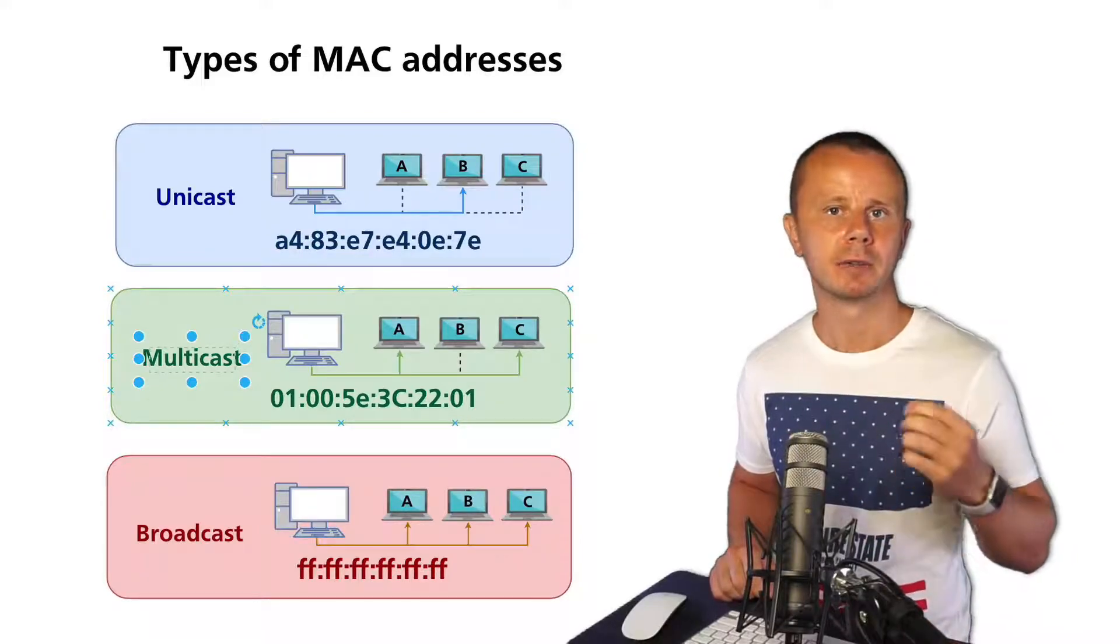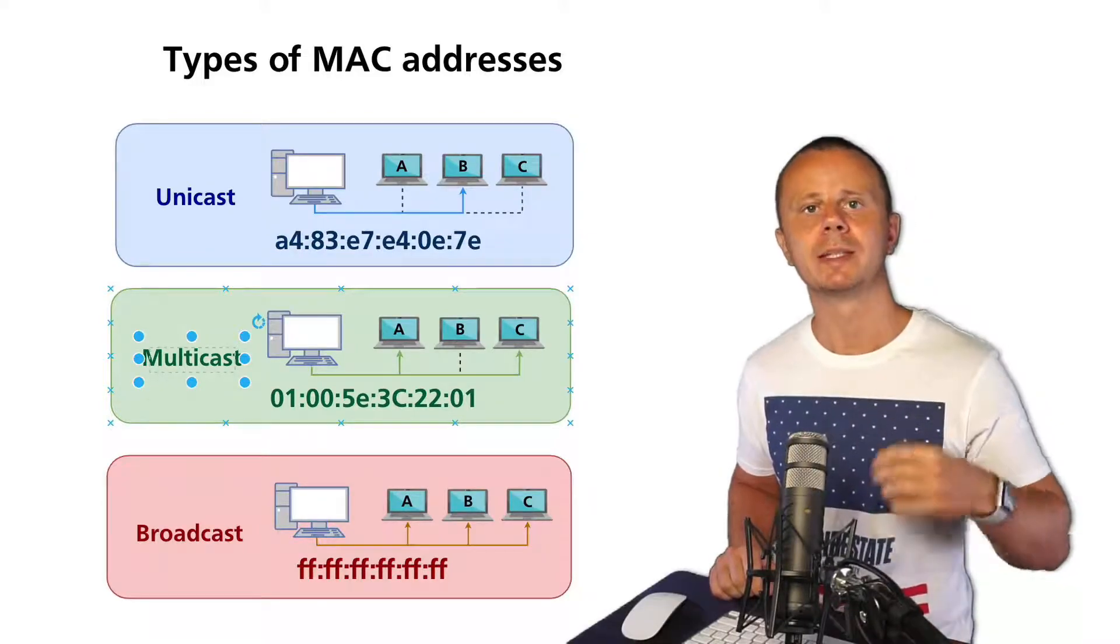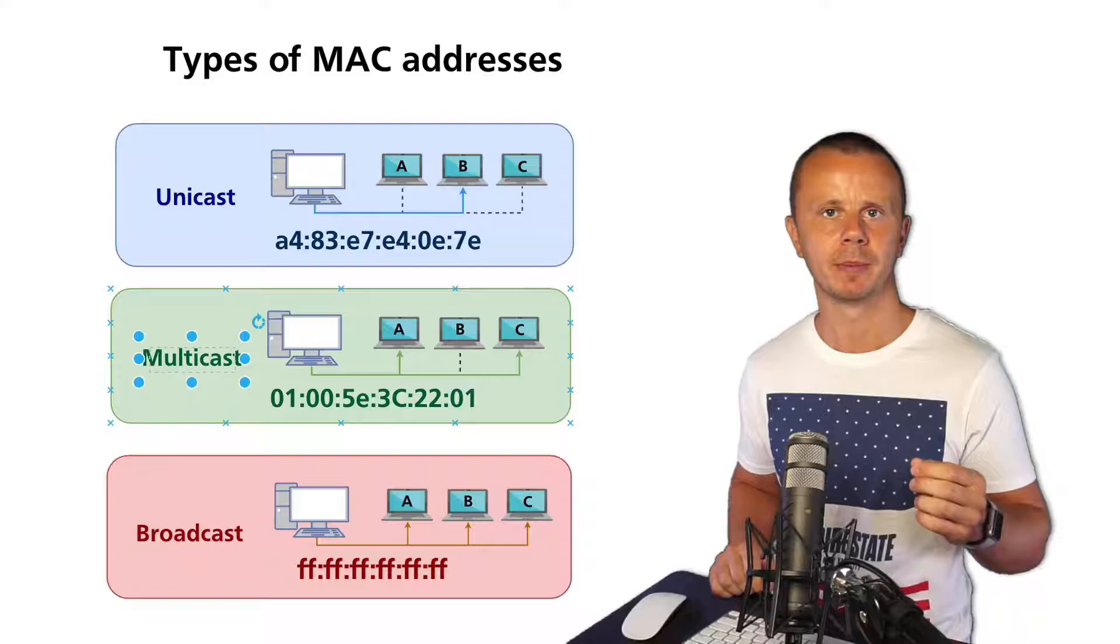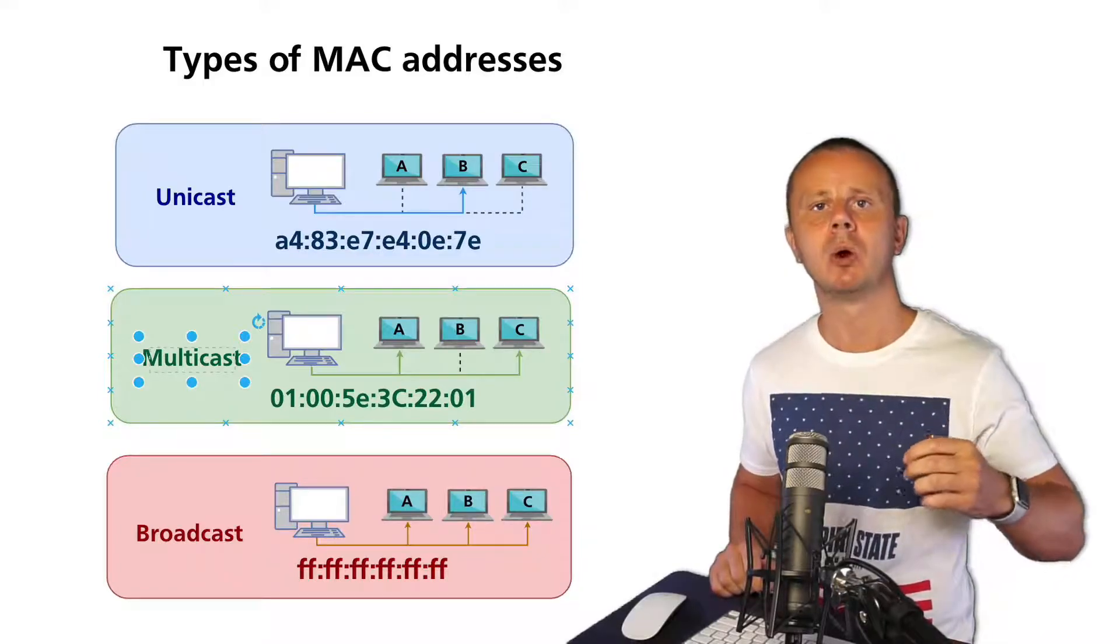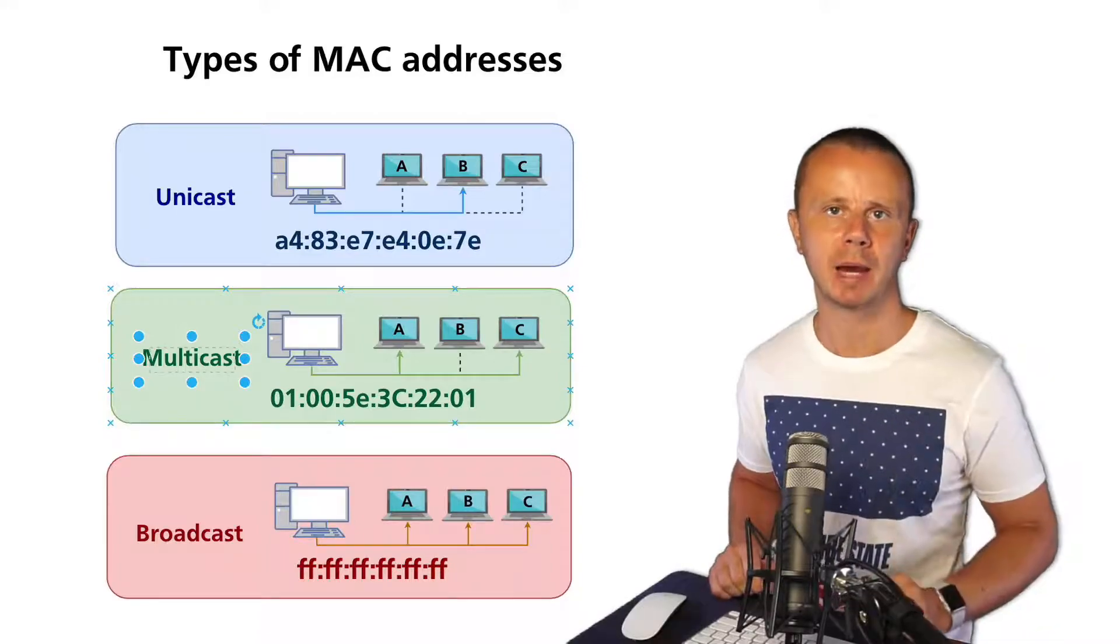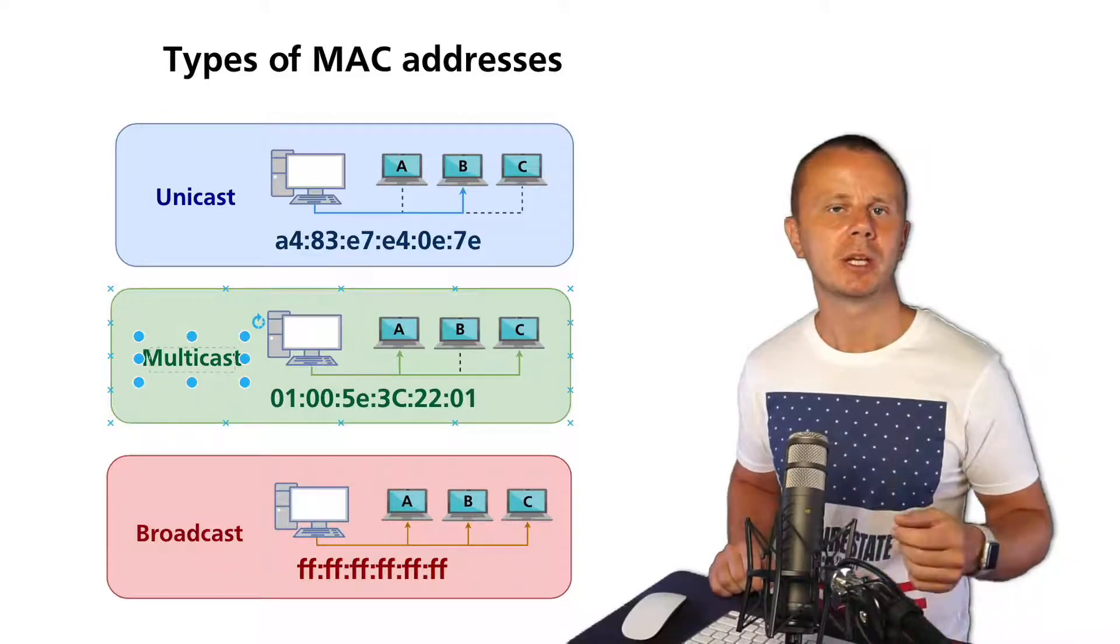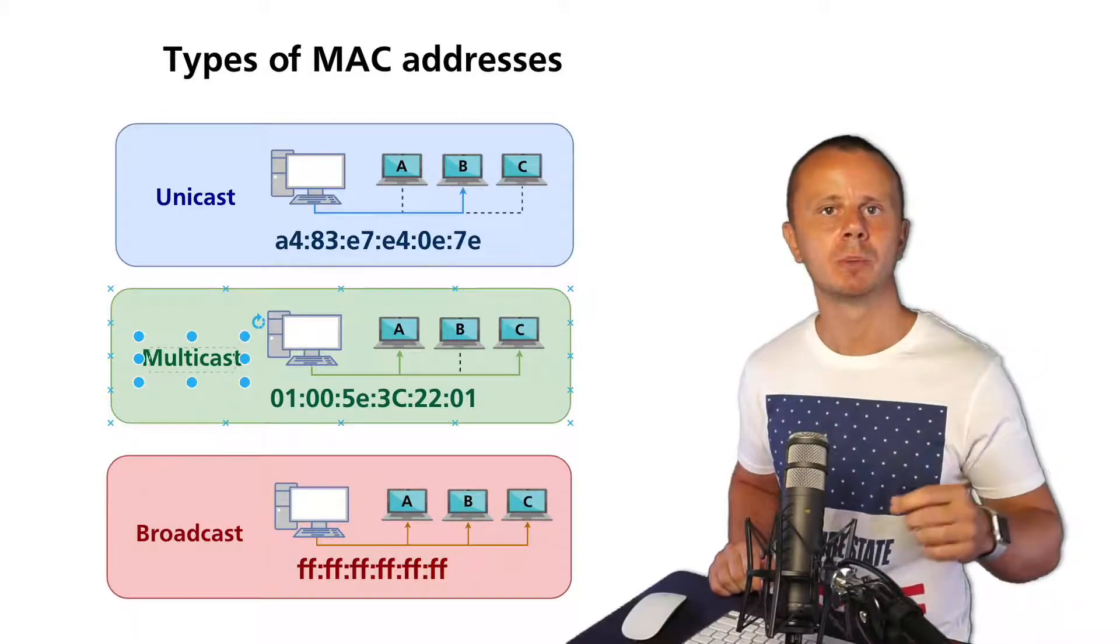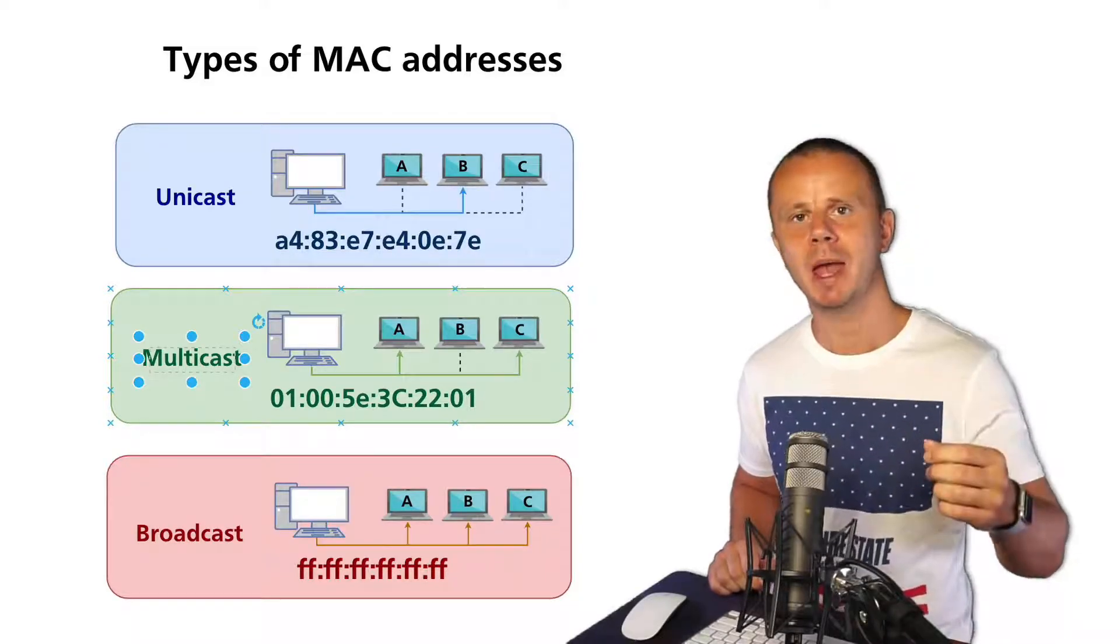In such case, several devices may register to receive a specific stream, and the sender may send only one stream to the destination multicast MAC address. Of course, in such case the destination IP address will also be multicast and will be mapped to the destination multicast MAC address.